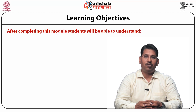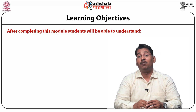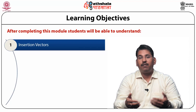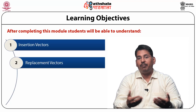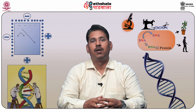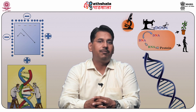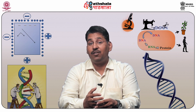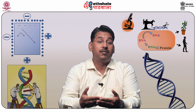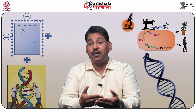After completing this module, you should be able to understand about insertion vectors, different kinds of replacement vectors, cosmids, and phasmids. Before coming to the main topic, we have to summarize bacteriophage lambda, which will help to understand the phenomena of insertion and replacement vectors easily.